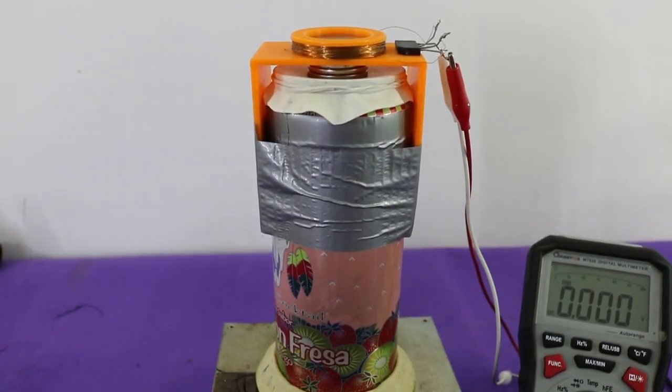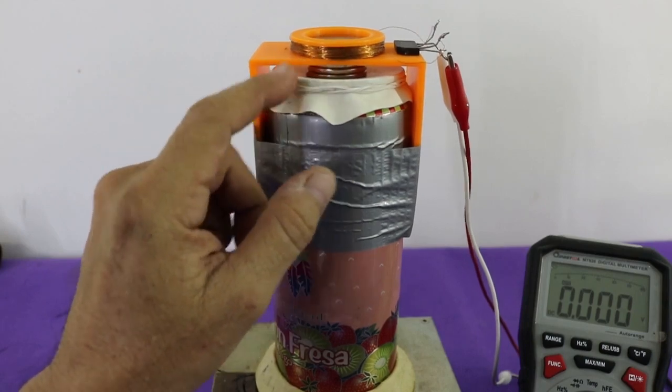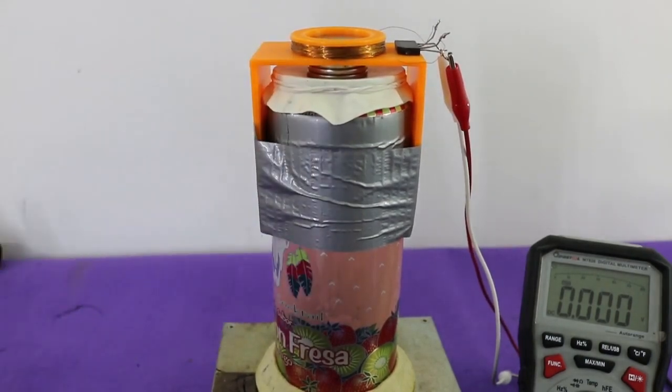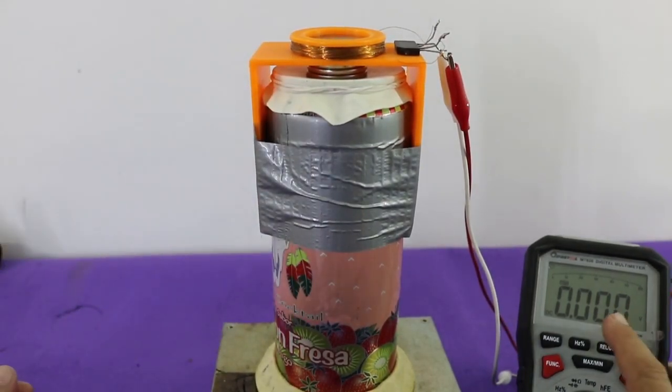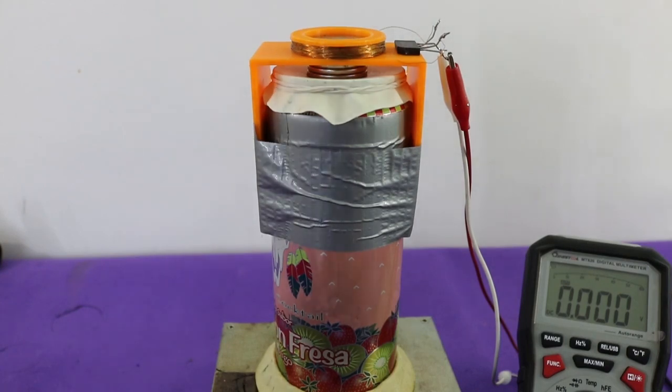Okay we could see that we have some problems of the magnet colliding with the plastic part however we got a voltage in the multimeter of around 1.5 volts but we are interested not only in the voltage but also in the current